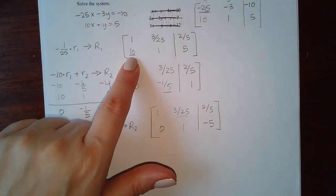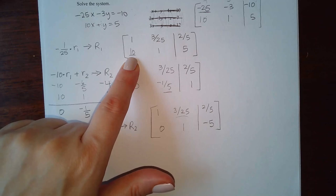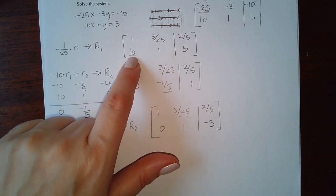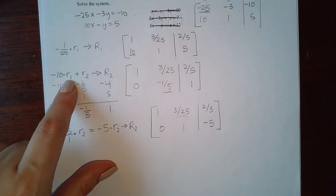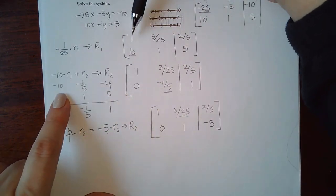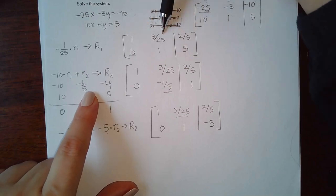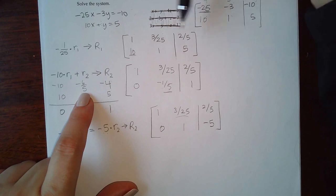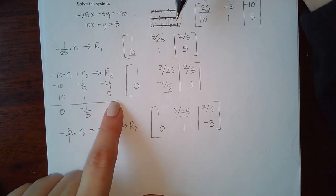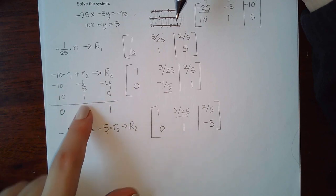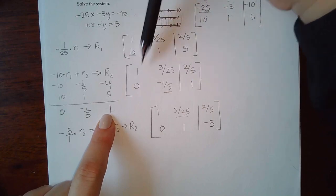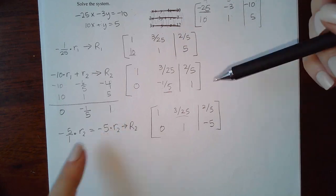The next thing I needed to do was change this 10 into a 0. To do that we add the opposite, so we need to add -10 times row 1 to row 2. Using the calculator: 1 × (-10) = -10; (3/25) × (-10) = -6/25; (2/5) × (-10) = -4. Adding row 2 underneath gave me 0, then -1/5, then positive 1. That became my new row 2; row 1 stayed the same.